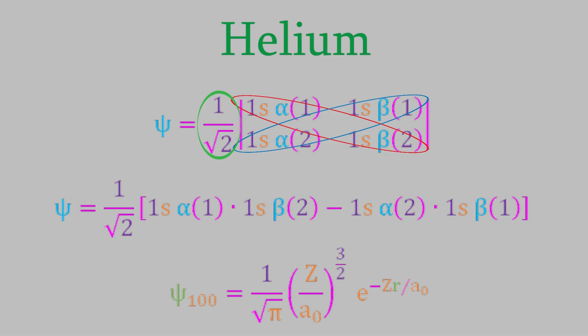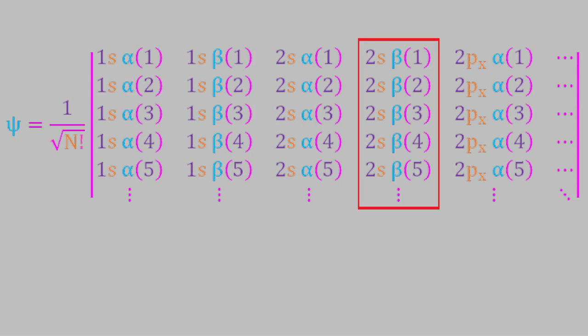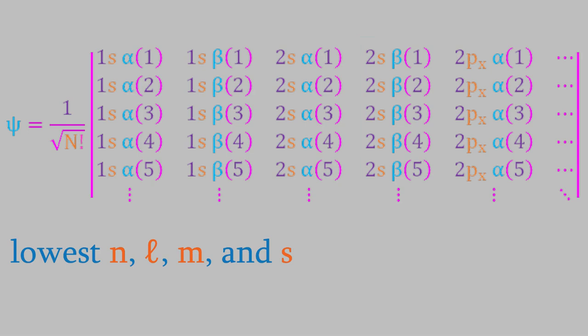So, in general, the determinant that describes the wave function of an atom looks like this. Each row represents a different electron, as represented by the number in parentheses in the elements for that row. Meanwhile, each column is a different orbital and spin the electrons could be in, starting with the lowest values for the quantum numbers n, l, and m, and s on the left. So, for example, the first two columns are for the 1s orbital. The next two are for the 2s orbital. And the next six would be for the three different 2p orbitals. Overall, if there are n electrons in the atom, then this determinant will have n rows and columns.